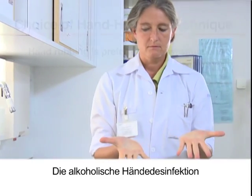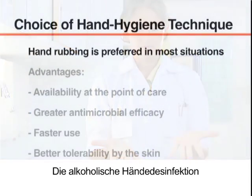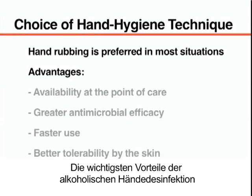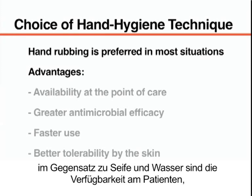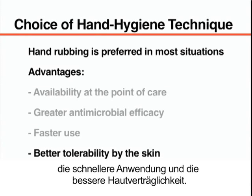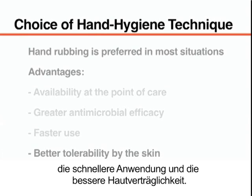Hand rubbing with an alcohol-based formulation is the preferred hand cleansing procedure in most clinical situations. The main advantages of alcohol-based hand rubs, as opposed to soap and water, include availability at the point of care, greater antimicrobial efficacy, faster use and better tolerability by the skin.